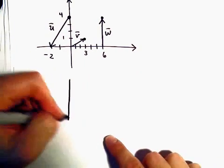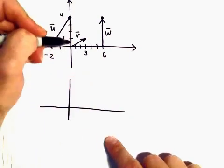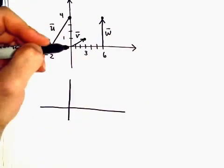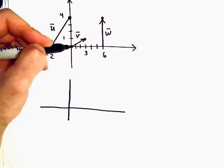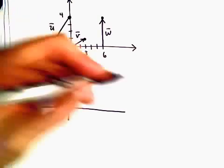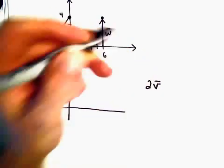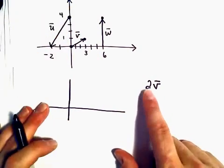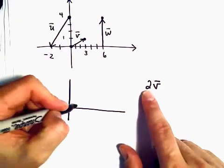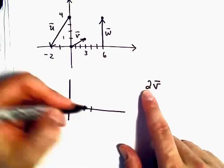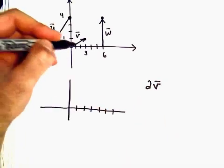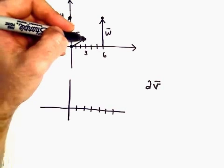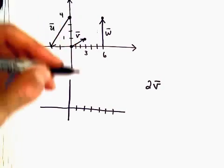Okay, so I'm going to sketch 2V. We've got vector V, and again, that starts at the origin and goes to the point 3, 1. When you multiply a vector by a number, all it does is it just stretches it out. So in this case, our vector is going to go two times as far. So instead of going to 3, 1, imagine another vector V attached onto that. That would go three units to the right and one unit up.